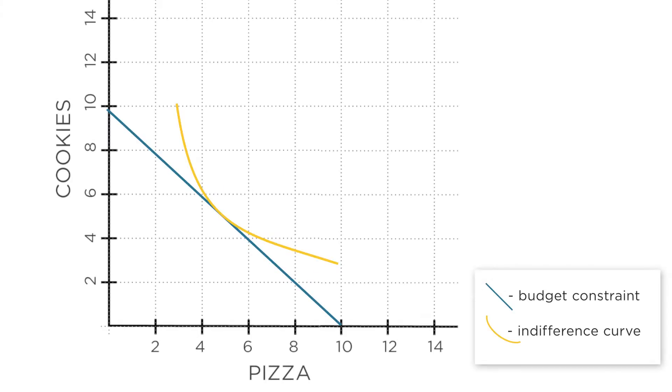Let's think of this graphically using a concrete example. Here's a familiar graph with a budget constraint and an indifference curve. The horizontal axis shows how much pizza you're eating. The vertical axis shows how many cookies you're eating.